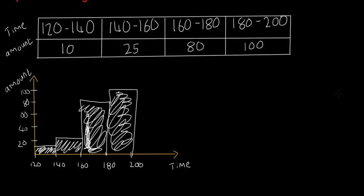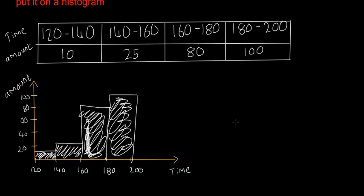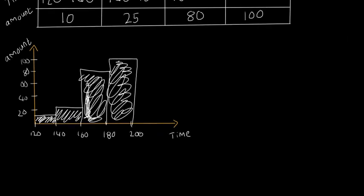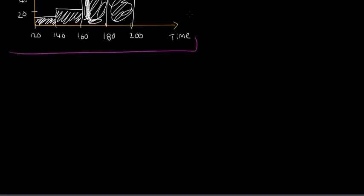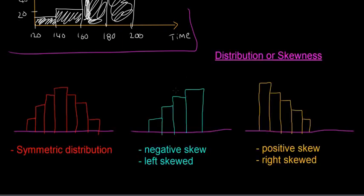Before we go, we're also just going to look quickly at different distributions of histograms. The last thing you need to know about histograms is the distribution, the shapes they can take. It's sometimes called distribution or sometimes called the skewness or the shape.